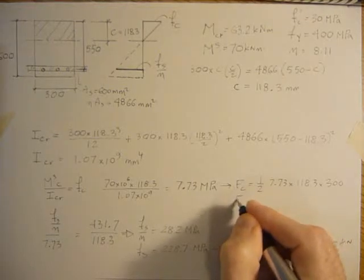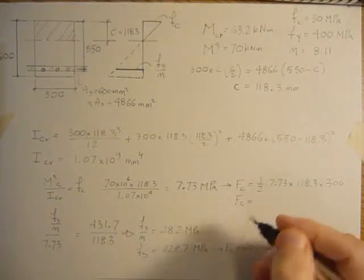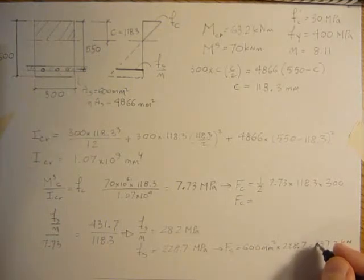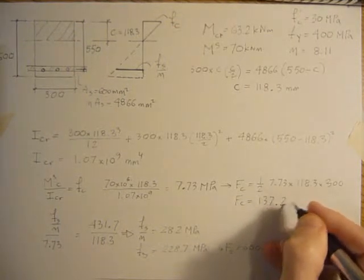So the force in the concrete equals 0.5 times 7.73, times 118.3 times 300. That gives me 137.2 kilonewtons.